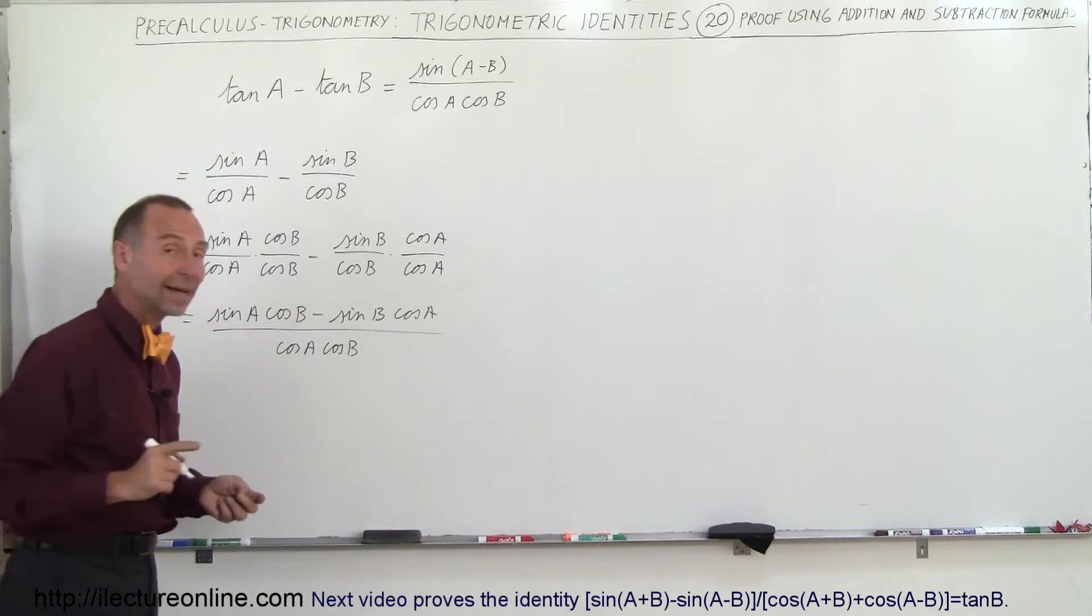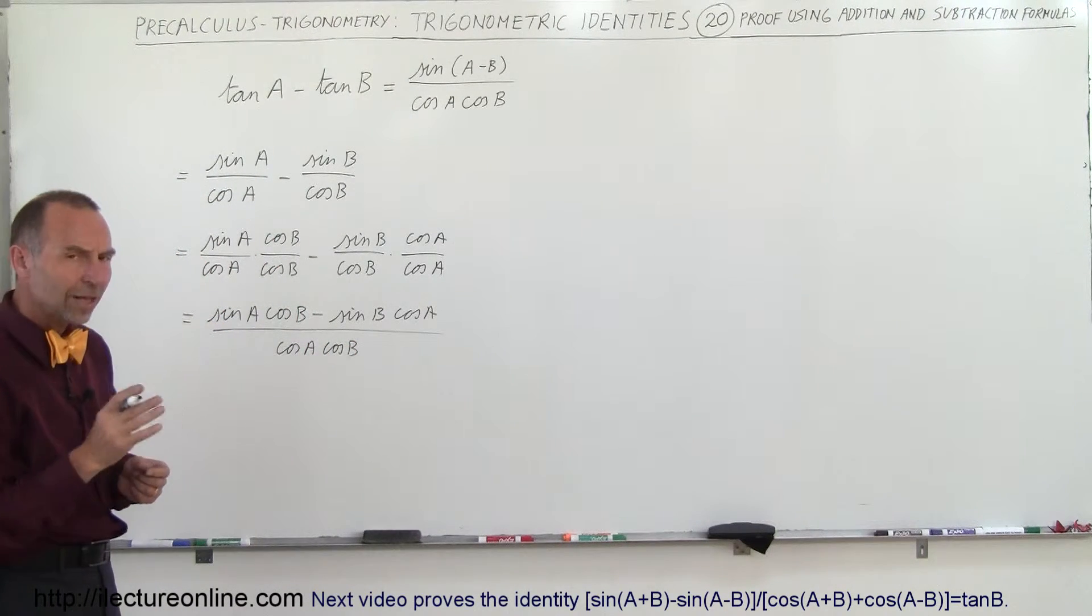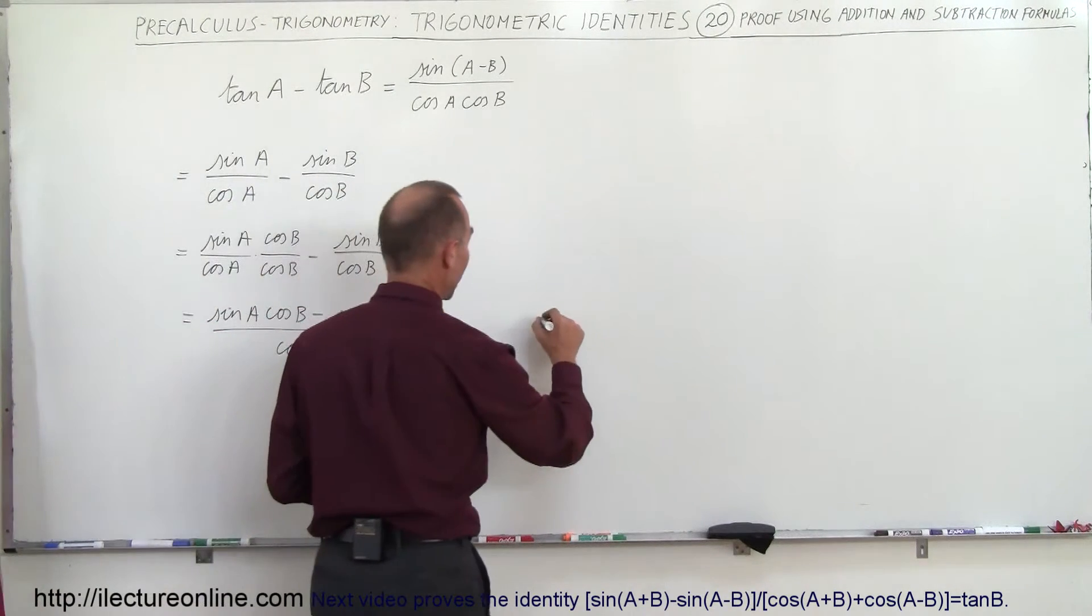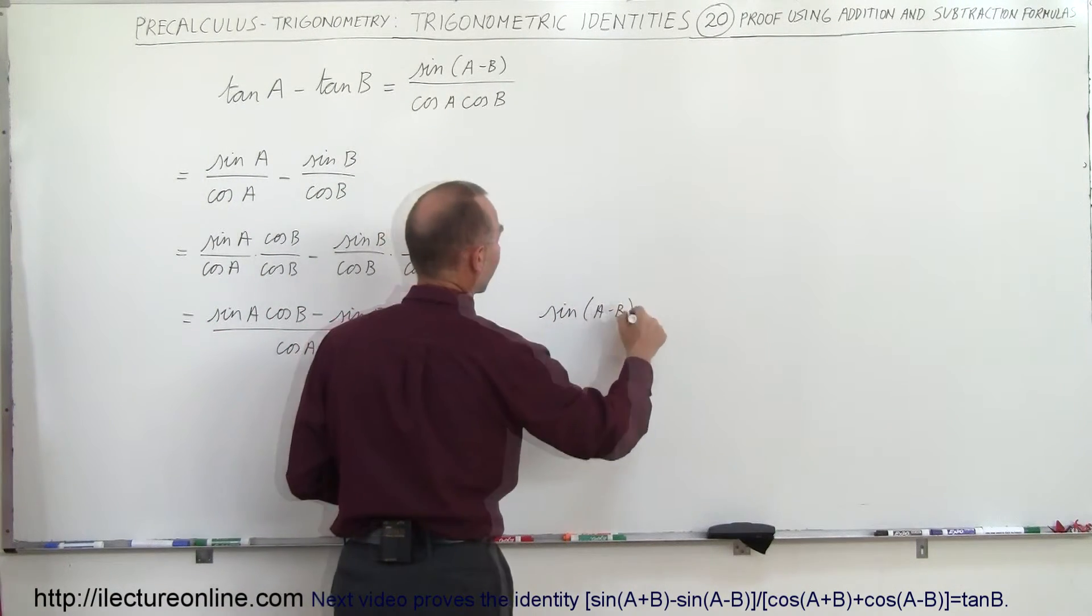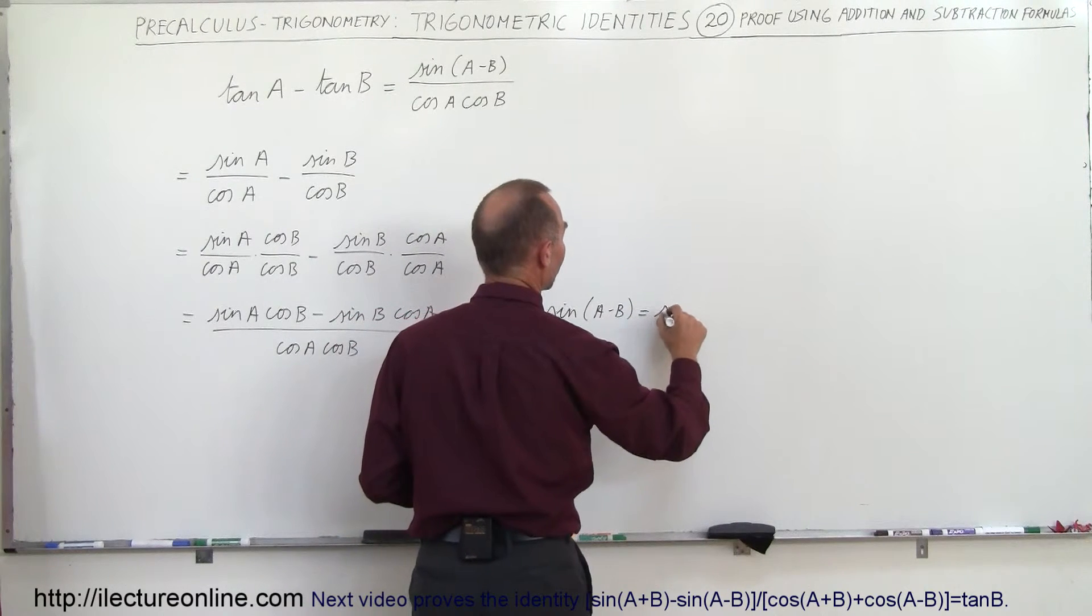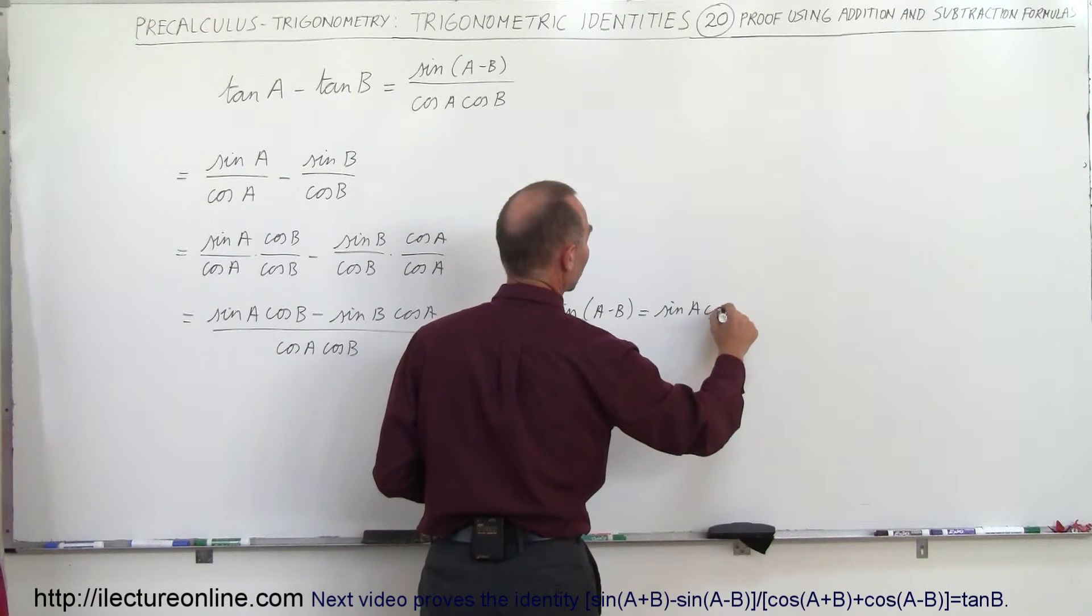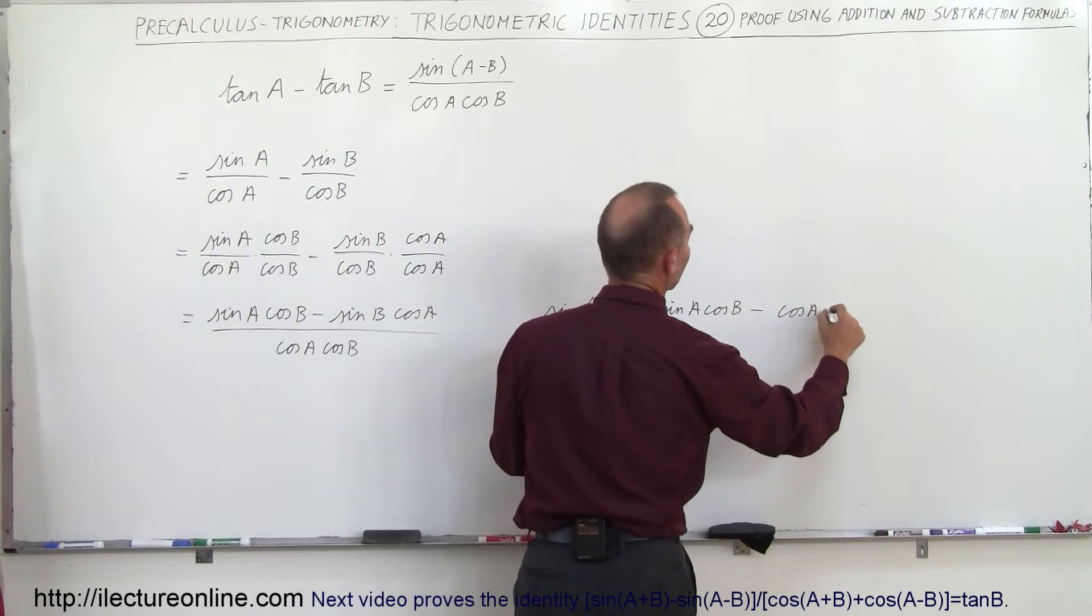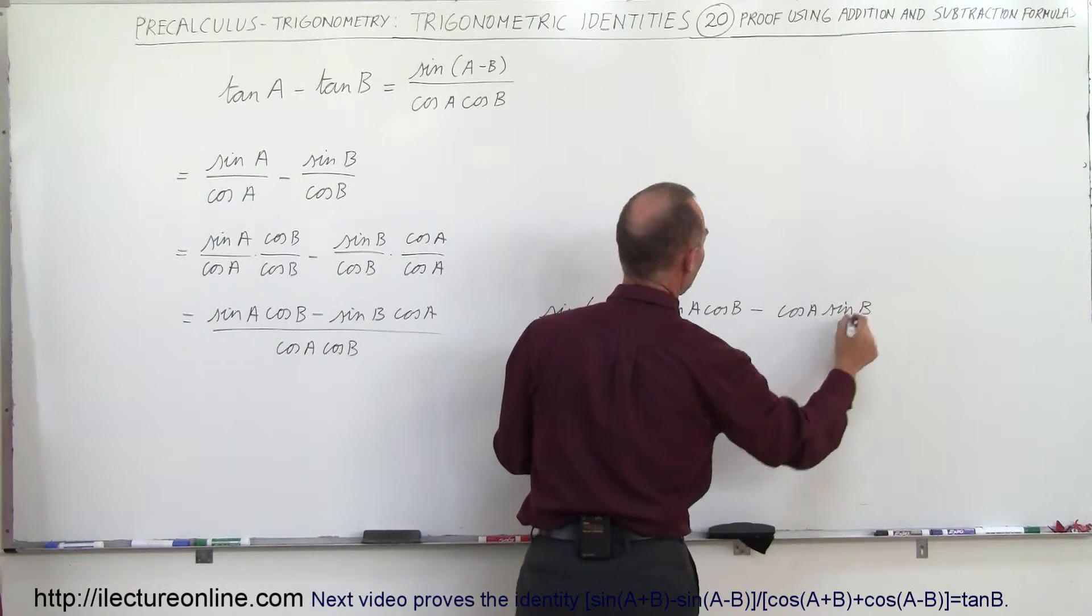Now you have to recognize the numerator. Notice the numerator. Doesn't it look a lot like sine of A minus B? Remember, when we write sine of A minus B, that is equal to sine of the first angle times cosine of the second angle minus cosine of the first angle times sine of the second angle.